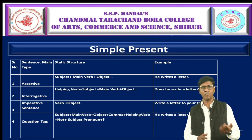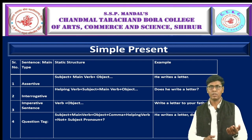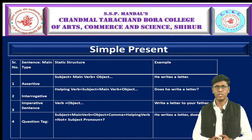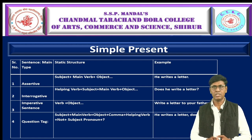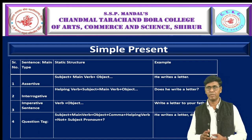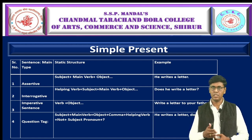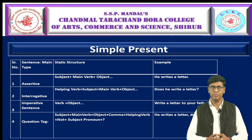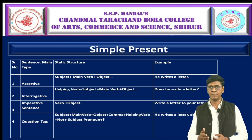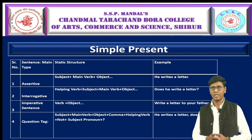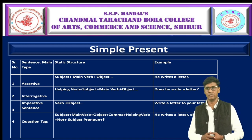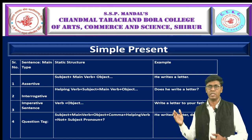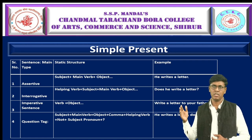In the same way for interrogative sentences, as given in the table, a helping verb is necessary to put initially, then subject, main verb, and object. For example: Does he write a letter? And like this, so many sentences you can form.